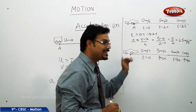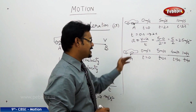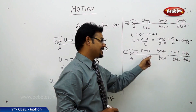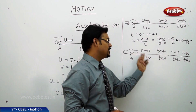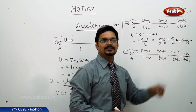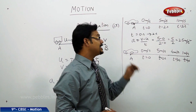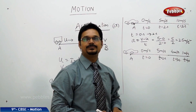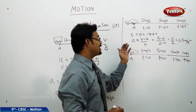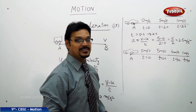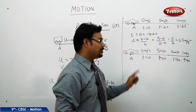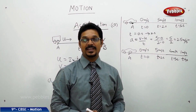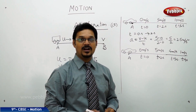Now, coming to the second diagram. In the second diagram, t = 0, 2 seconds, 3 seconds, 4 seconds, and the speeds are 0, 5, 4, and 1 meters per second. So, speed is decreasing: 5, 4, 1. In the first diagram, speed is increasing. When the speed is increasing, we can say the car is accelerating. When the speed decreases, you can say the car is negatively accelerating, or you can say the car is decelerating.